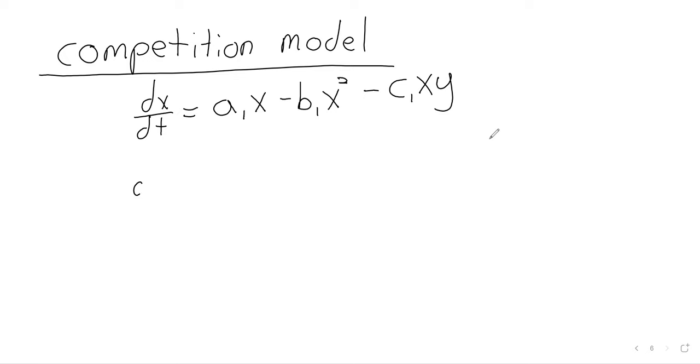And then these equations are very, these equations are the same except for what we call our variable. Because unlike the predator-prey model, where the two species are fulfilling different roles, here the two species are fulfilling the same role. They're both predators or they're both prey.